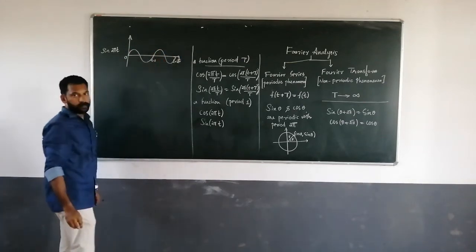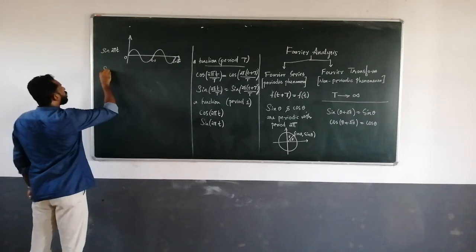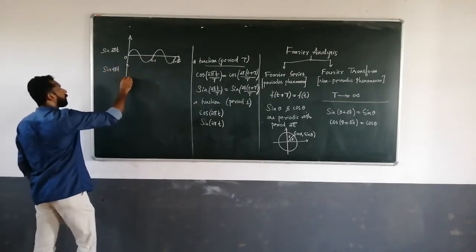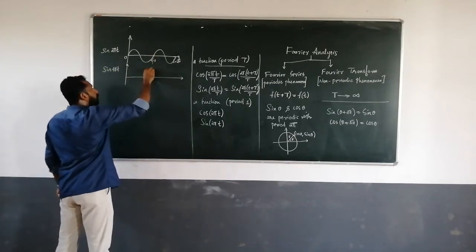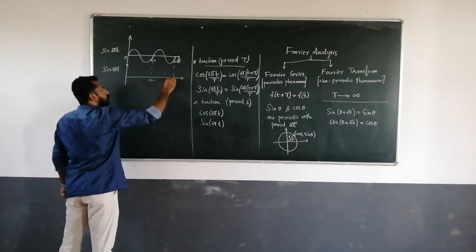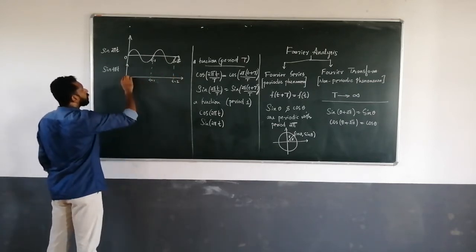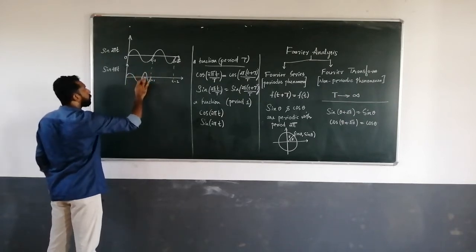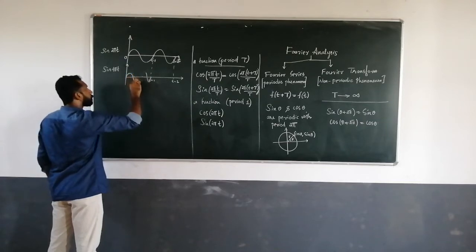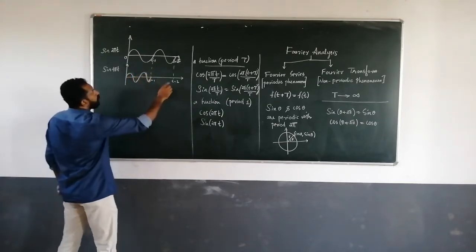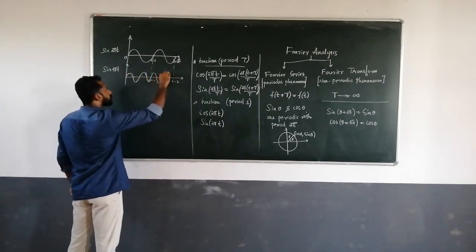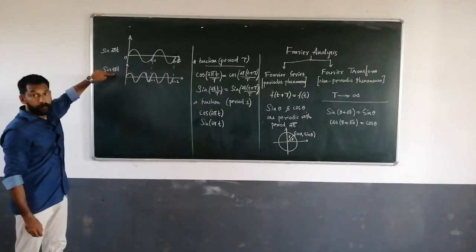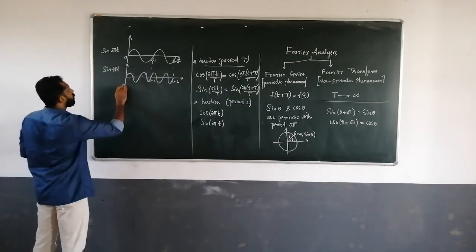Now consider sin(4πt). For t = 1, it completes 2 cycles. For t = 2, it completes 4 cycles. That is, here the frequency is doubled compared to sin(2πt).